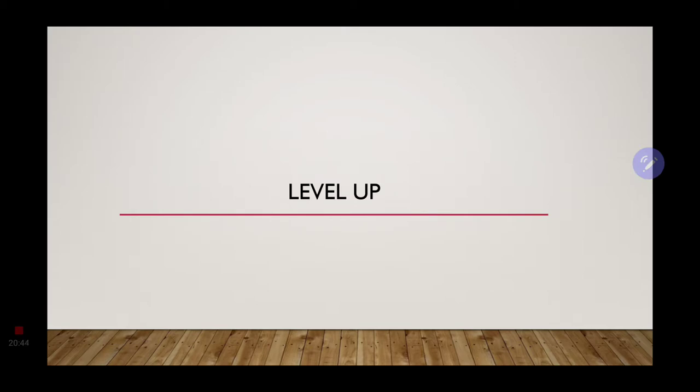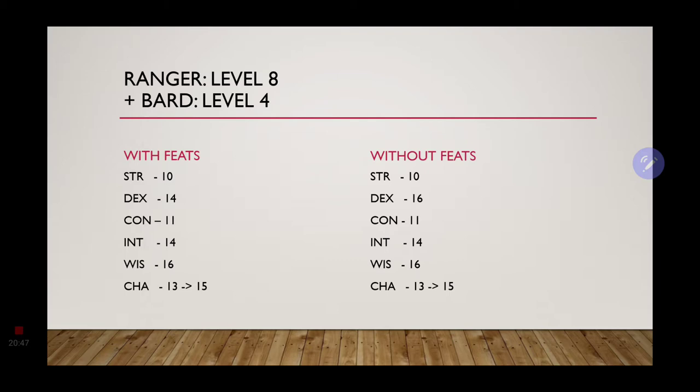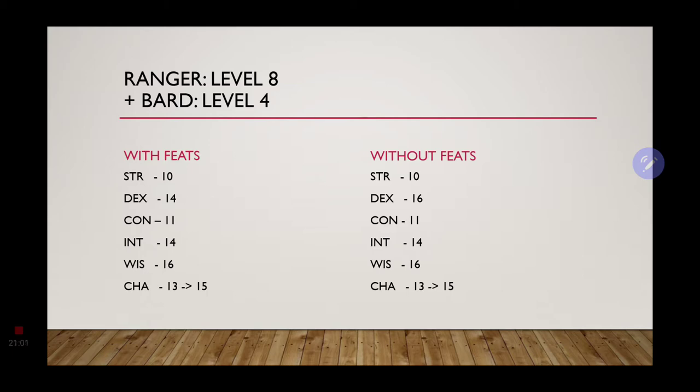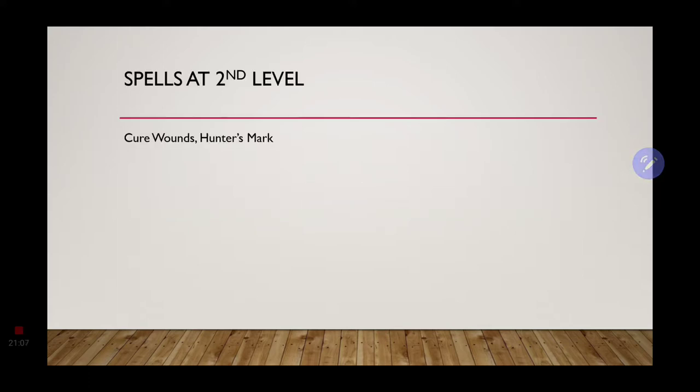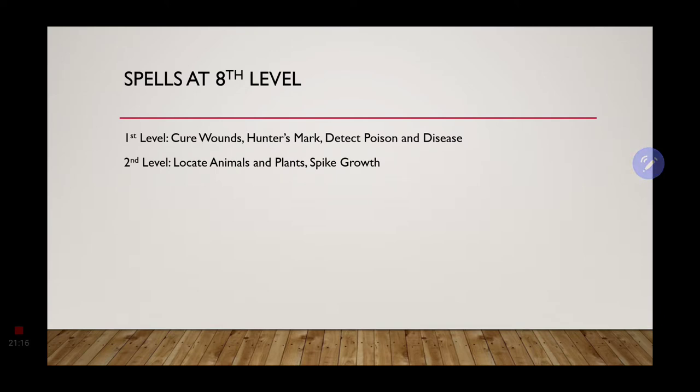And for our final level up, we are taking one more level into the Bard, but we are not taking any more feats. So, we are just going to go ahead and increase our Charisma score by two, giving us a 15. Now, to go over the spells that we have acquired. At second level, we will have our two ranger spells: Cure Wounds and Hunter's Mark. At eighth level, our ranger spells increase. We'll have detect poison and disease, locate animals and plants, and we'll also have spike growth for a little bit of defense or offense.